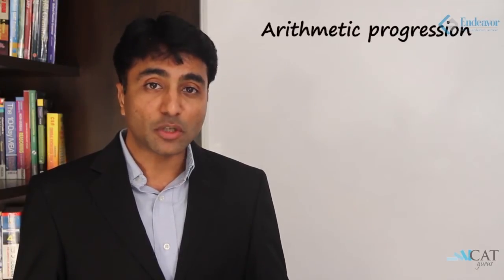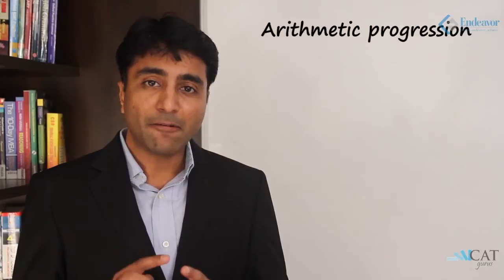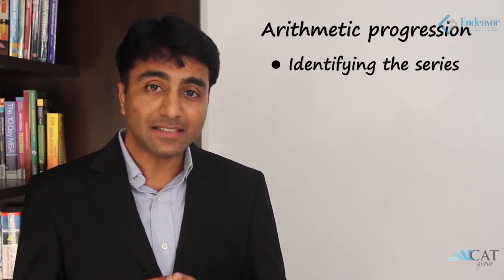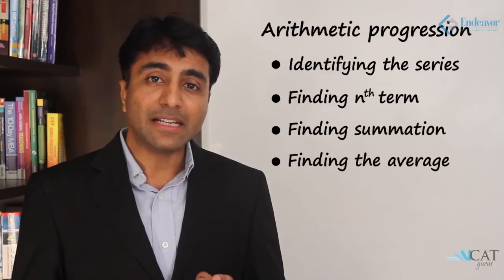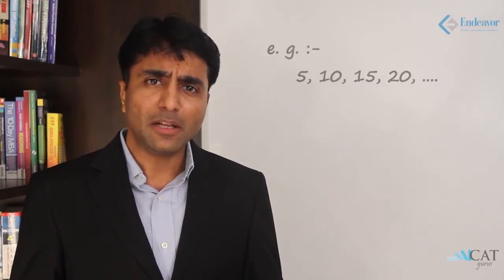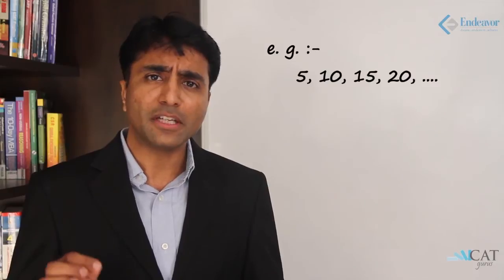In arithmetic progression we need to learn three things: first, identifying the series; second, finding the nth term and summation; and third, finding the average, that is the arithmetic mean. Now, what exactly is an arithmetic progression? An arithmetic progression is a series of numbers that have a constant difference between two consecutive numbers.